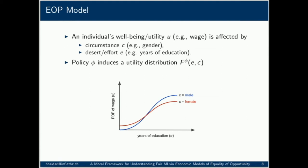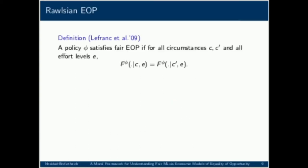Next, I will tell you about two variants of EOP: Rawlsian EOP and Lucky Egalitarian EOP. The difference between these two is in how they treat E. Rawlsian EOP assumes E is interpersonally comparable, and in particular assumes that the level of E is not affected by circumstance C or implemented policy phi. It then requires that for individuals with similar effort level E, the distribution of utility is the same regardless of circumstance.